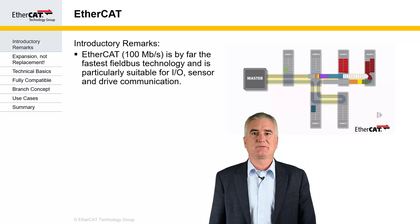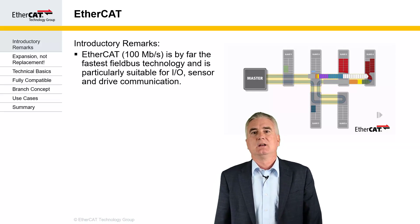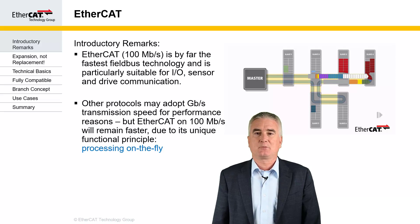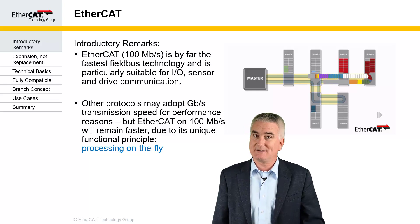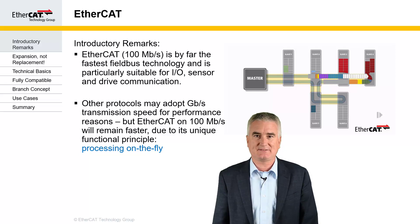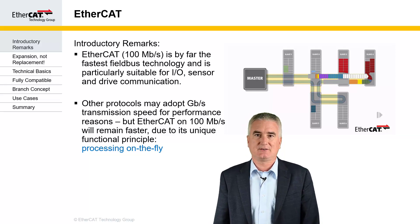EtherCAT is known to be by far the fastest industrial Ethernet technology available and it's particularly suited for fieldbus type applications such as controller to drives, controller to I/O, and sensors etc. And whereas others may adopt gigabit physical layer and require gigabit physical layer for performance reasons, EtherCAT does not. EtherCAT is the fastest and will remain the fastest. Even on 100 megabit, EtherCAT will remain faster than any other gigabit based technology. Why? Because of our unique functional principle called processing on the fly.